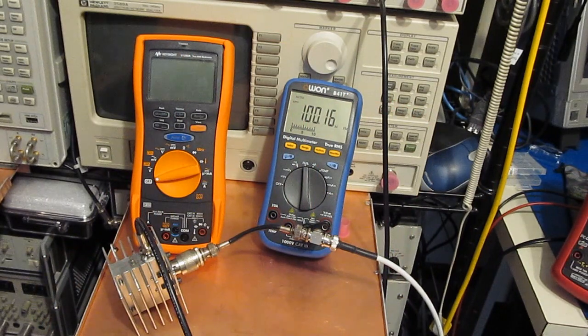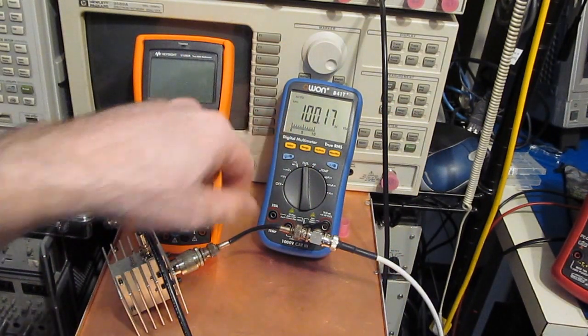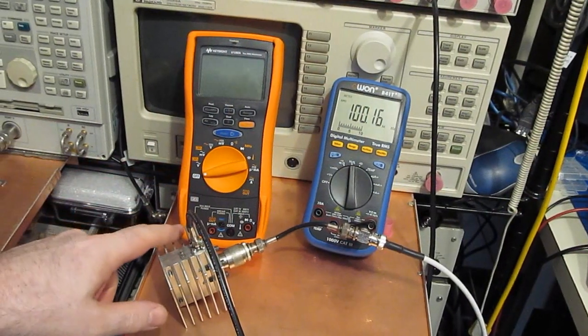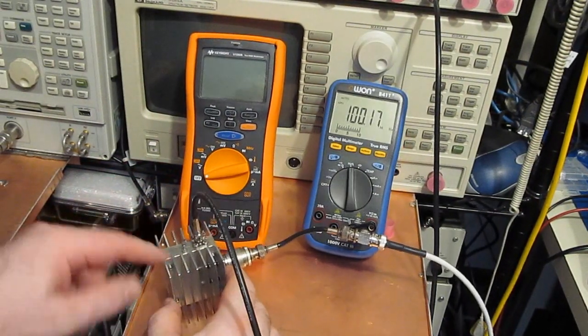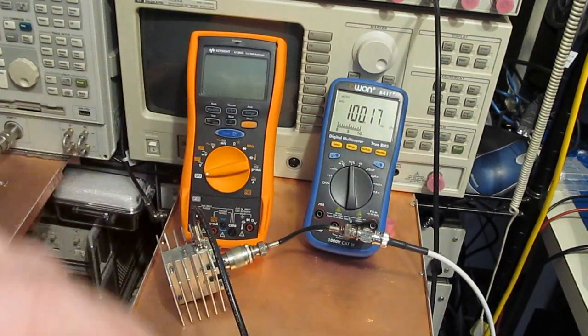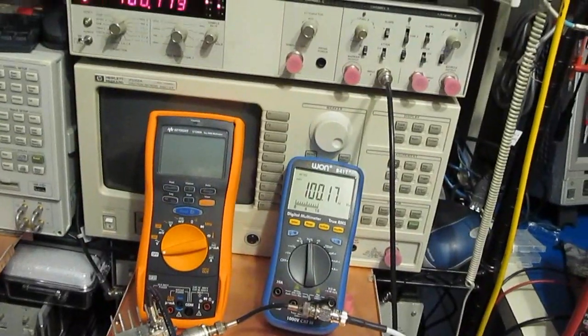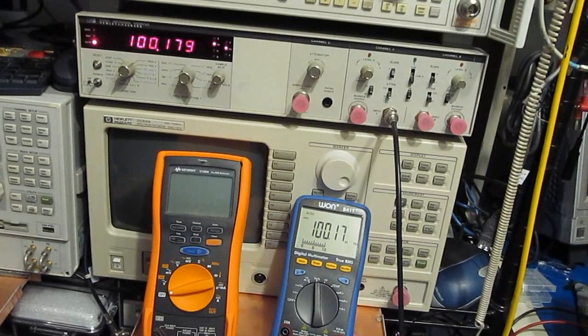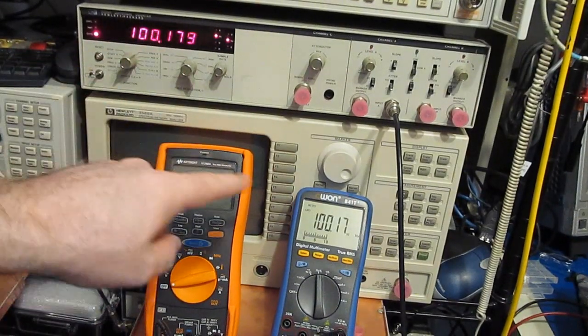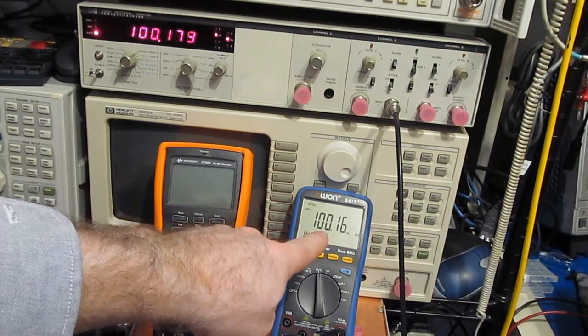Let's just have a look at a couple of other low-cost meters. On the right I have the Owen B41T Plus. Down here I have a 50 ohm terminator. Inside of this I have a 40 dB attenuator. This cable then is going off to our frequency counter. You can see we are currently putting out 100 megahertz.